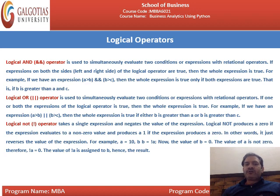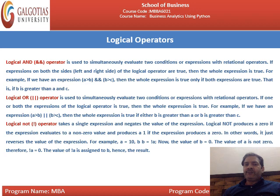In logical AND, the truth table is the same. It is used to evaluate two conditions or expressions with relational operators. If the expressions on both the left and right sides of the logical AND operator are true, then the whole expression is true. For example, if we have an expression A > B AND B > C, both conditions must be true. If A > B is false, no need to proceed further. If A > B is true, you move forward and check whether B > C. Only if both expressions are true will the whole answer be true.